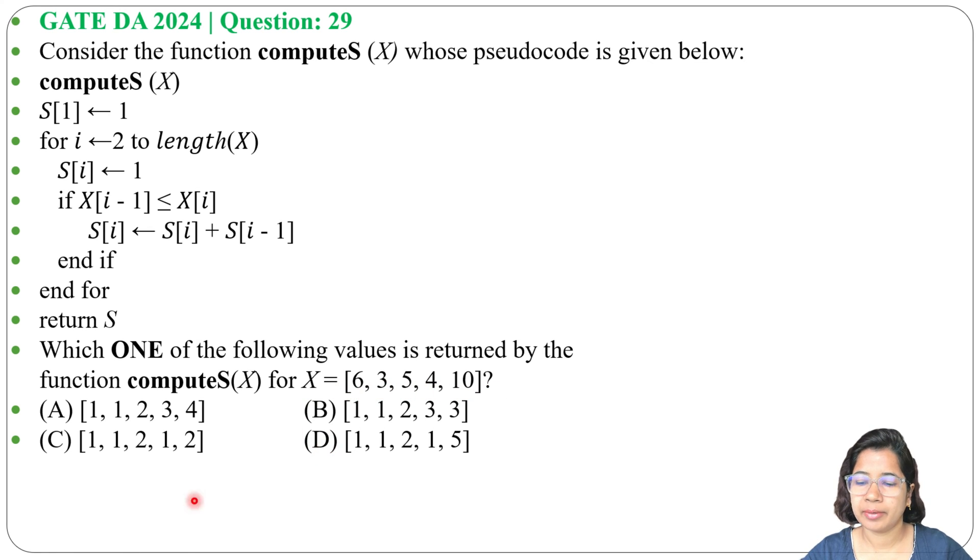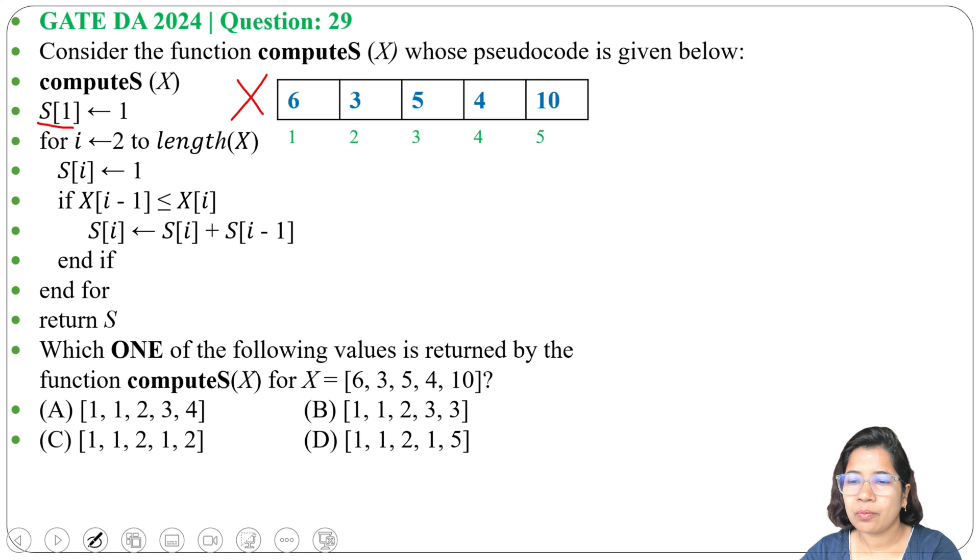Four options are given. Here the array given is [6, 3, 5, 4, 10], this is our X. And S[1] = 1. That's why I'm starting indexing from one. Generally index starts from zero, but if it's given that index starts from one, then it should start from one.